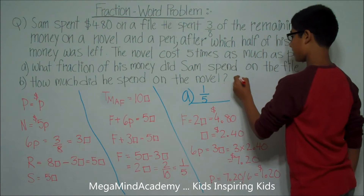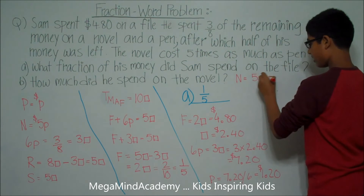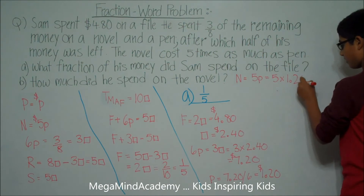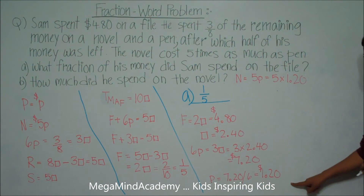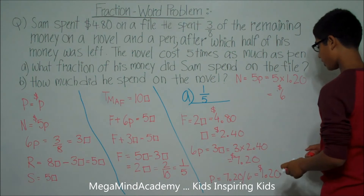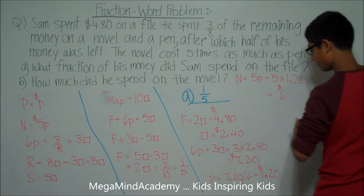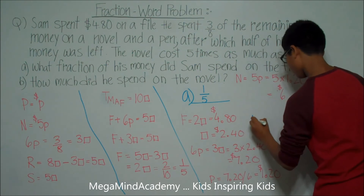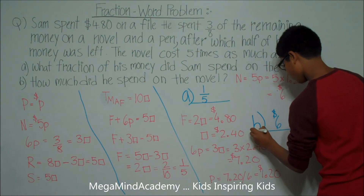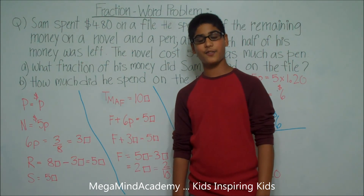This means the novel N, which costs five times the pen, is equal to five times $1.20, because the cost of one pen is $1.20, which is equal to $6.00. So the answer to Question B is $6.00. Today we learned about fraction word problems. Thank you for watching this video.